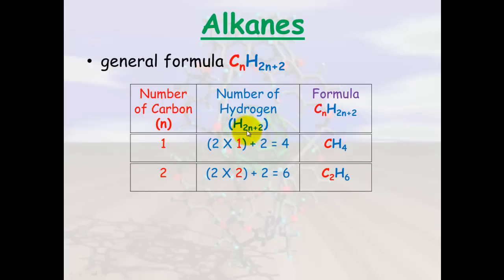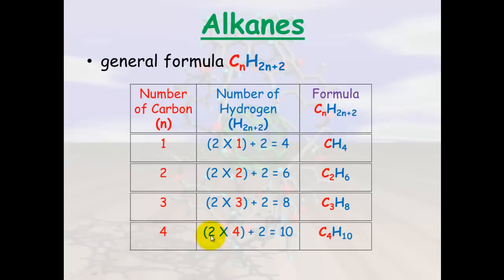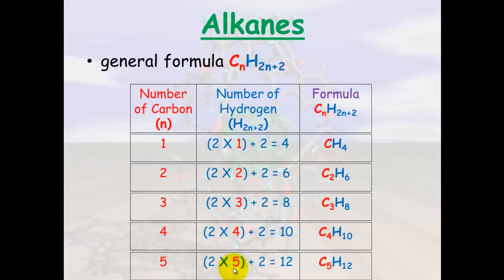For 3 carbons: 2n+2 gives 2 times 3 plus 2 equals 8, so C3H8. For 4 carbons: 2n+2 equals 10, so C4H10. And for 5 carbons: 2n+2 equals 12, so C5H12. That formula will always indicate that it's an alkane.